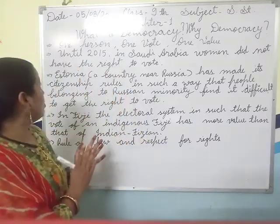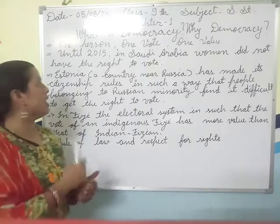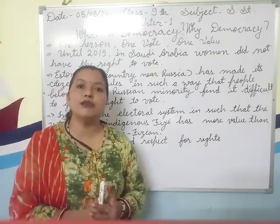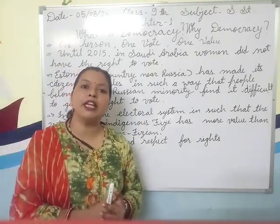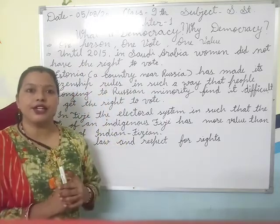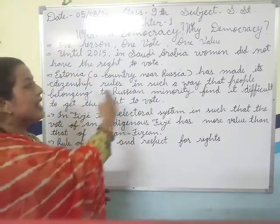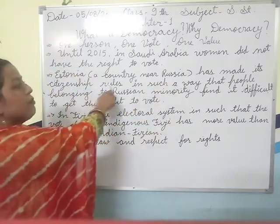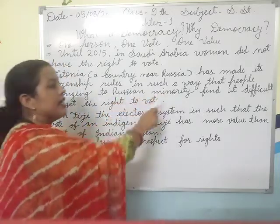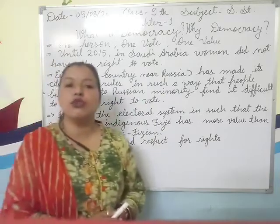The second example I have started today is Estonia, a country near Russia. In Estonia there is also a government. Estonia has made its citizenship rules in such a way that people belonging to the Russian minority find it difficult to get the right to vote.